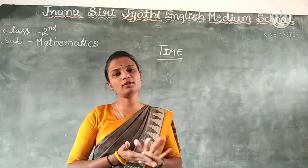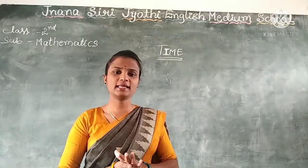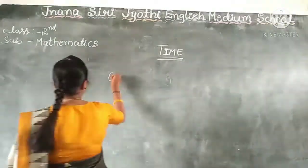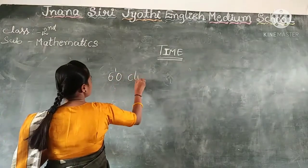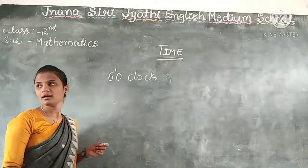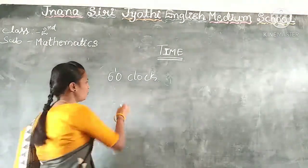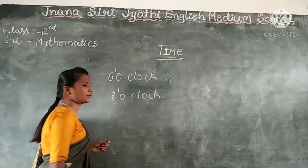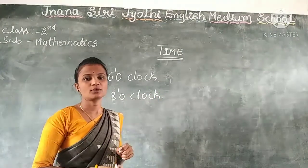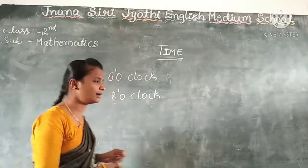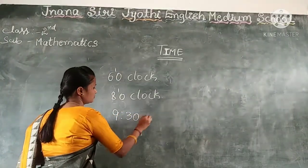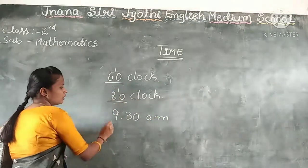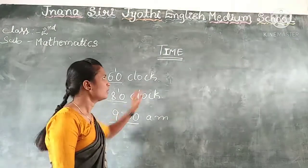Children, we do all our activities by taking note of the time. For example, you all wake up at 6 o'clock in the morning, and you have breakfast at 8 o'clock in the morning. Then you are all ready to go to school at 9.30. So here, 6 o'clock, 8 o'clock, and 9.30 — we represent the time.